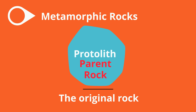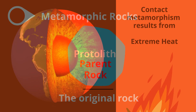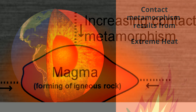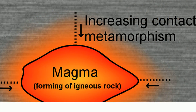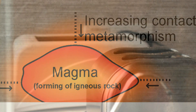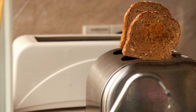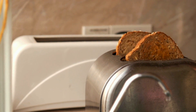Contact metamorphism occurs when existing rock comes into contact with extreme heat, like magma found inside the earth — kind of like when toast is exposed to heat inside the toaster and is changed.